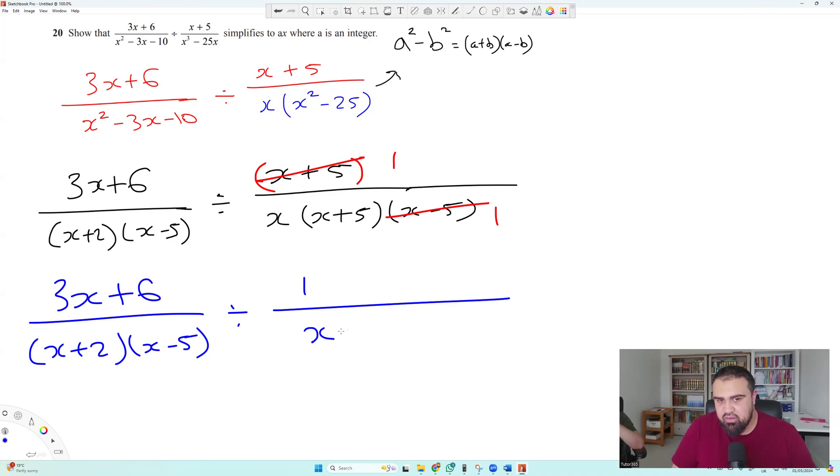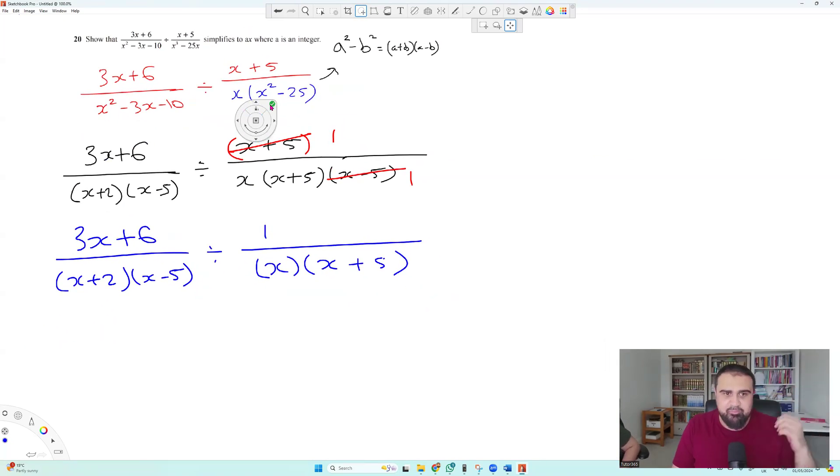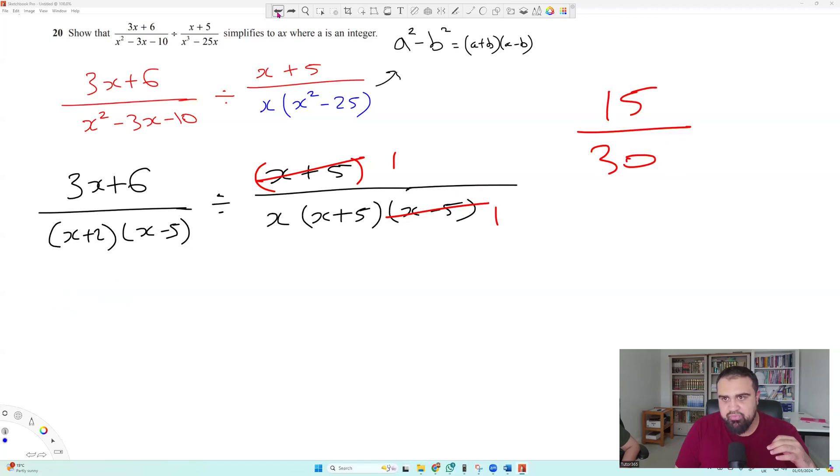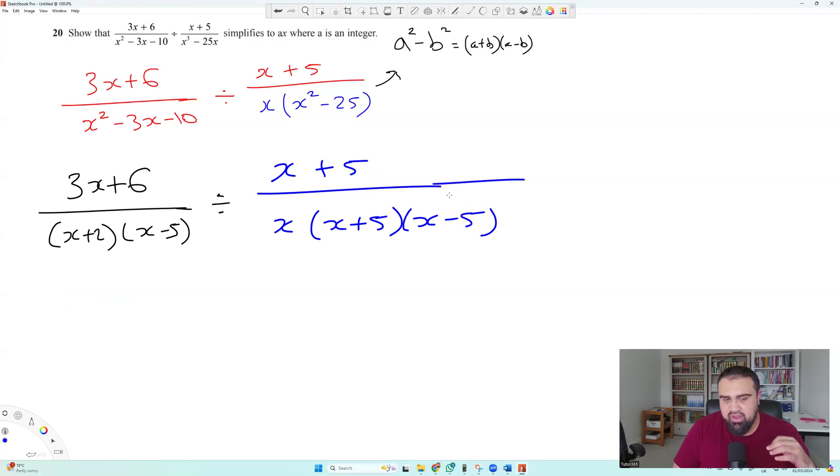So now, if you just clean up now, you've got 3x plus 6 over x plus 2, x minus 5, divide by 1 over x, open bracket x minus 5. Now, at this point, I think we've actually messed up. It's x minus 5. You canceled out the wrong one. Oh, I knew I'd done something wrong. So let me just rewrite it. So I had x plus 5 over x multiplied by x plus 5, x minus 5. So we canceled out the wrong one.